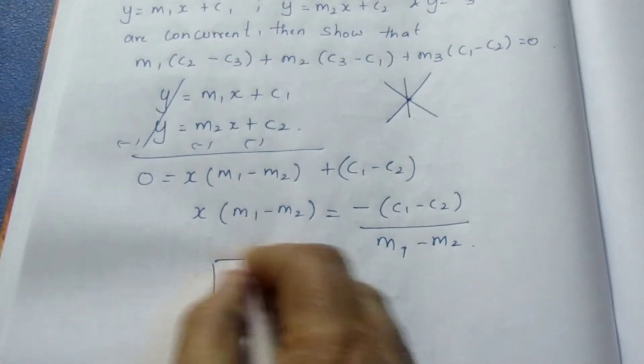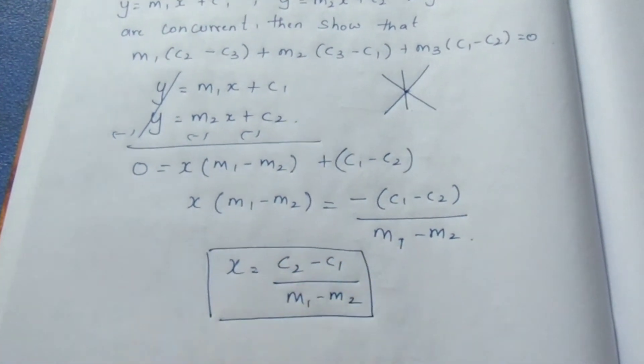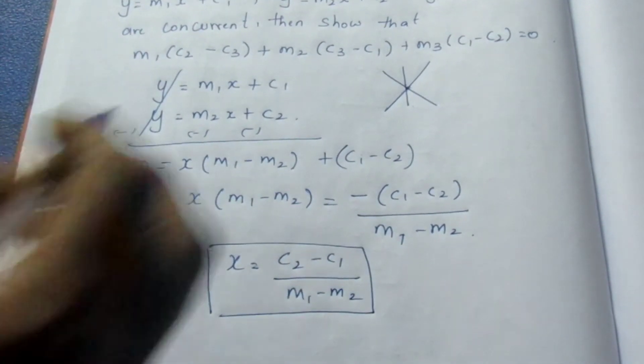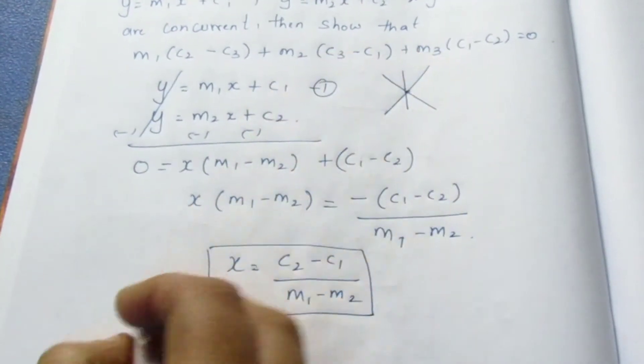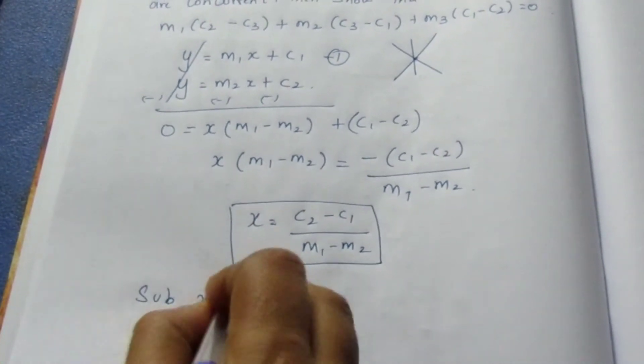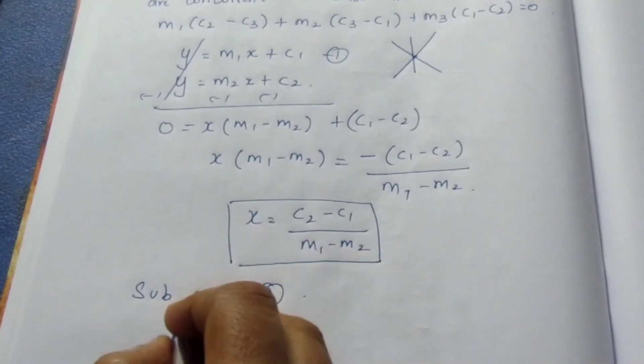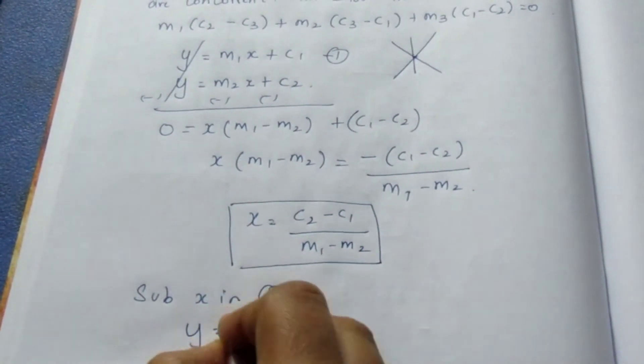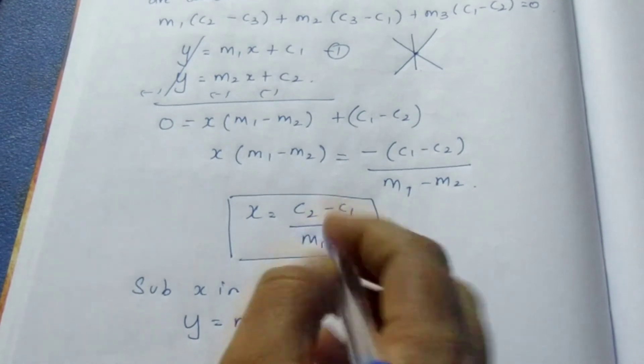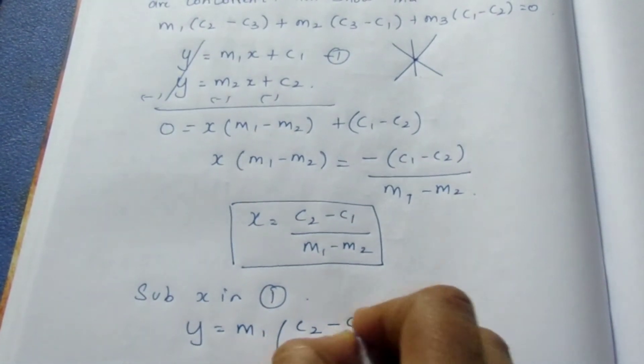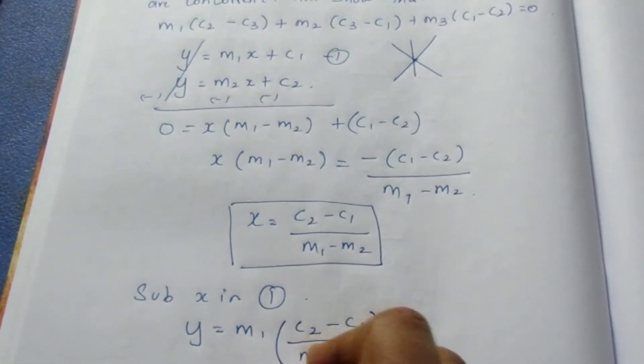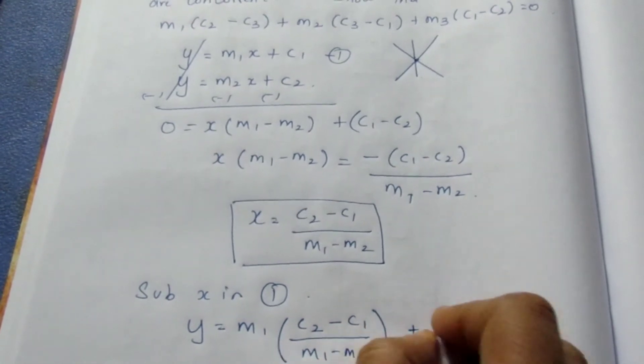This is your value of x. Substituting it in any of the equations, we get our y. Substituting x in equation 1, we get y = m₁[(c₂ - c₁)/(m₁ - m₂)] + c₁.